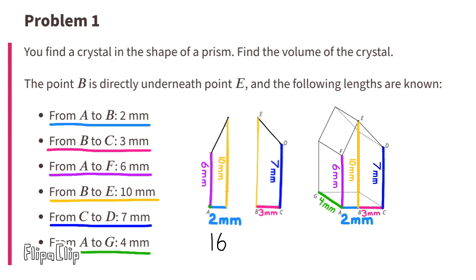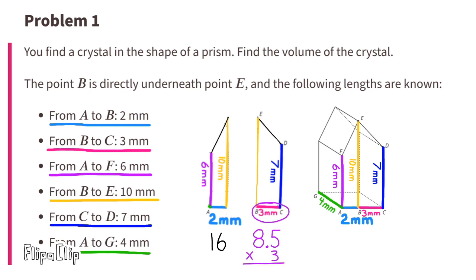We'll use that to help us find the volume of the crystal. Let's do the same thing to the trapezoid on the right. 10 plus 7 is 17, divided by 2 is 8.5. So we can treat this like a rectangle that's 8.5 millimeters by 3 millimeters. 8.5 times 3 is 25.5.